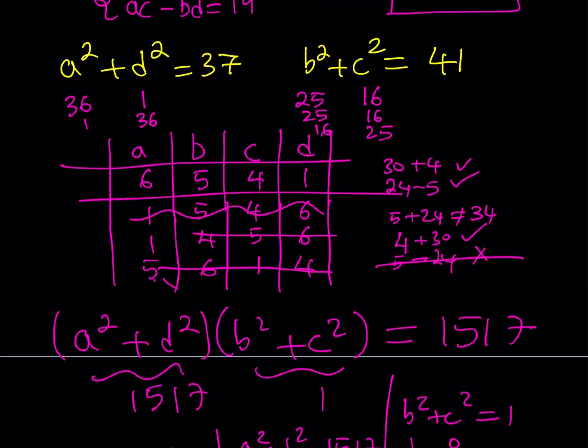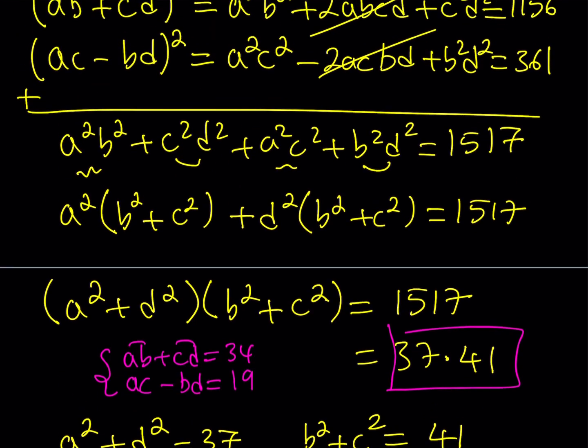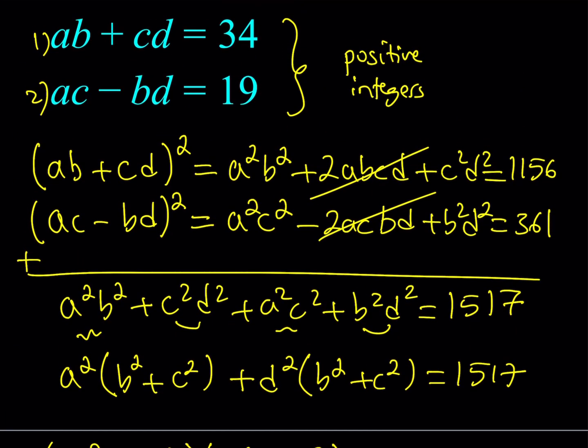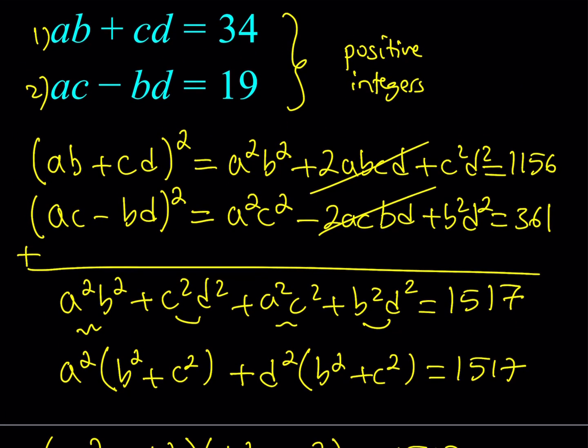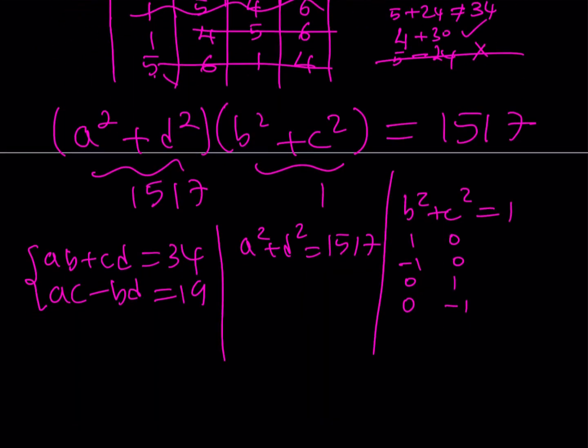Now, how do we find two numbers whose sum of squares equals this number? Well, if you go back to the very beginning, remember how we got this number. This number was actually the sum of two squares: 34² and 19². So this came from 34 and 19. So A could possibly be 34 and D could be 19 in this case.